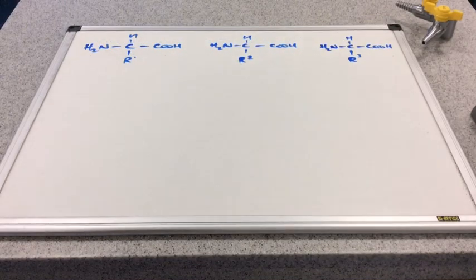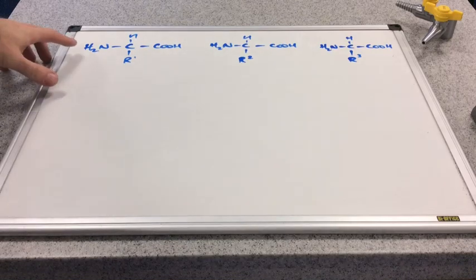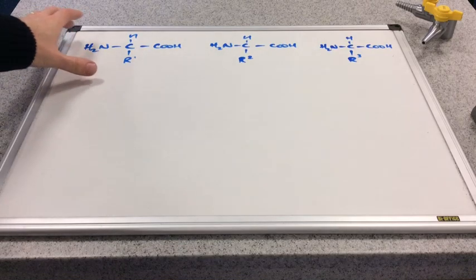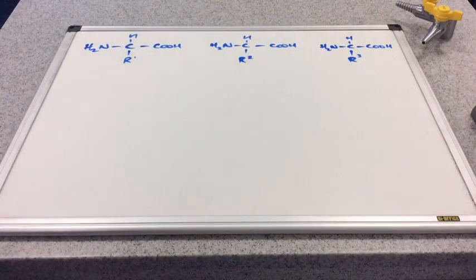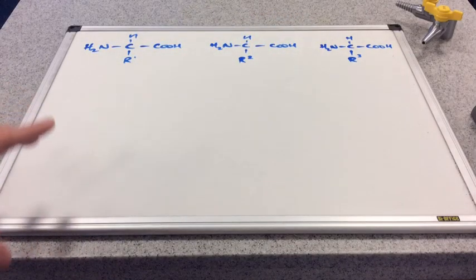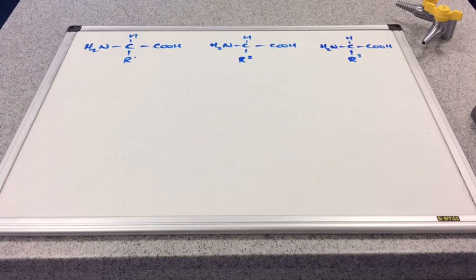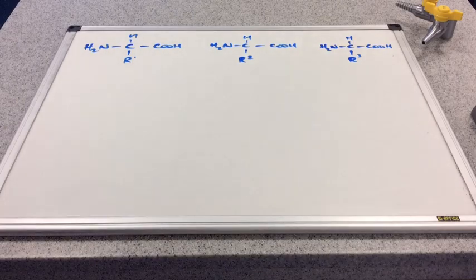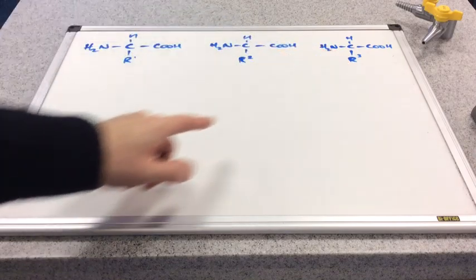Now because of the fact that we can join together amino acids differently. In other words, we could take the hydrogen from this one and the OH from this one or vice versa. There's various different combinations possible for the products. And then if you factor in as well, the R groups are different as well in the individual amino acids.